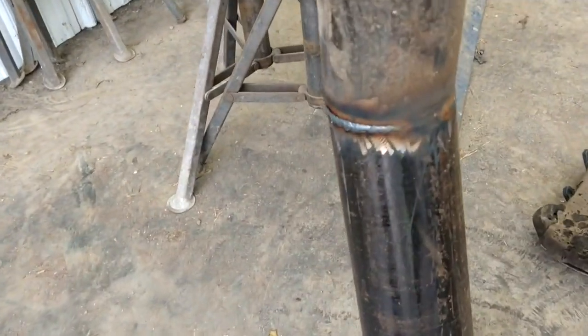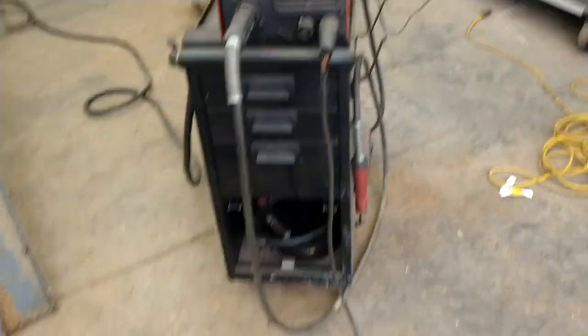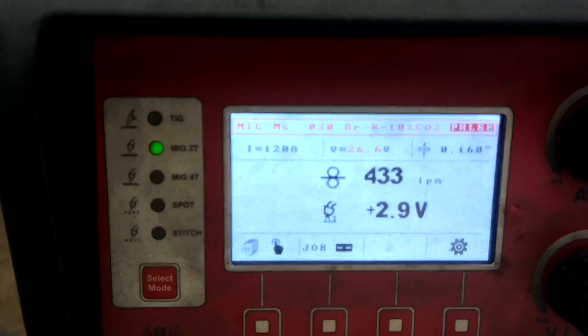I'm welding around these pipes at 120 amps with pulse mig. 120 amps 030 wire we're running 92.8.